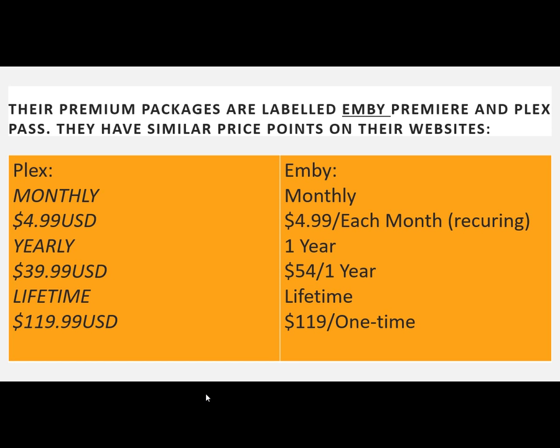If you want to stick with Emby or Plex, here are their premium packages — Emby Premiere and Plex Pass. They have similar price points: Plex monthly is $4.99 USD and Emby is the same. Yearly, Plex is $39.99 and Emby is $54. For lifetime, Plex is $120 and Emby is $119. Emby is more expensive for the yearly plan but roughly the same for other tiers.